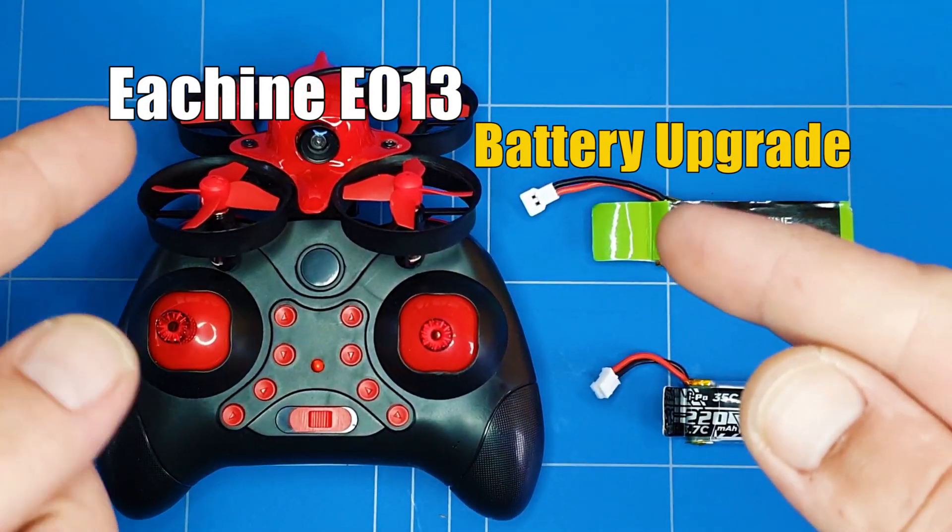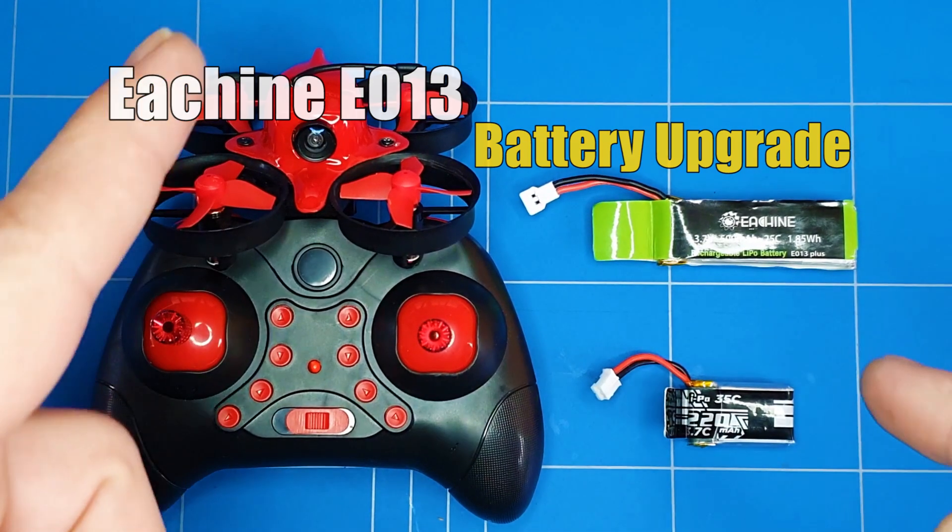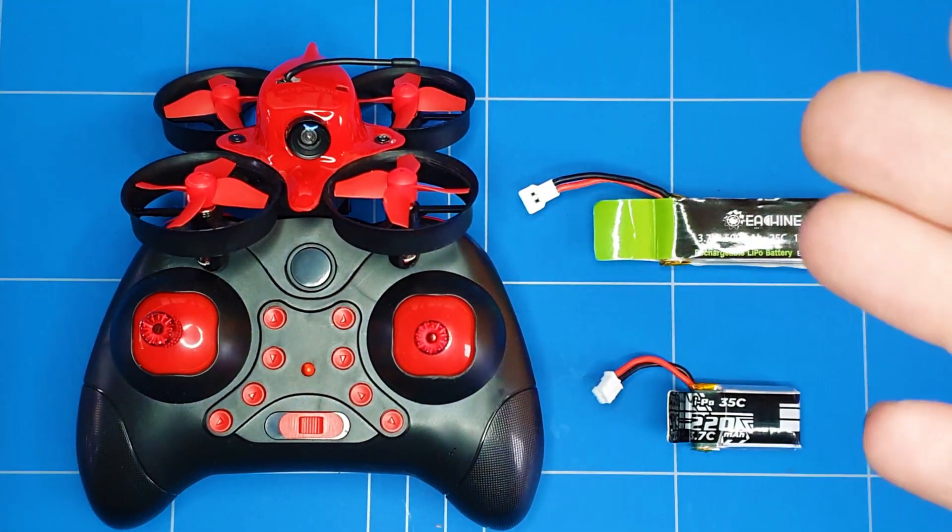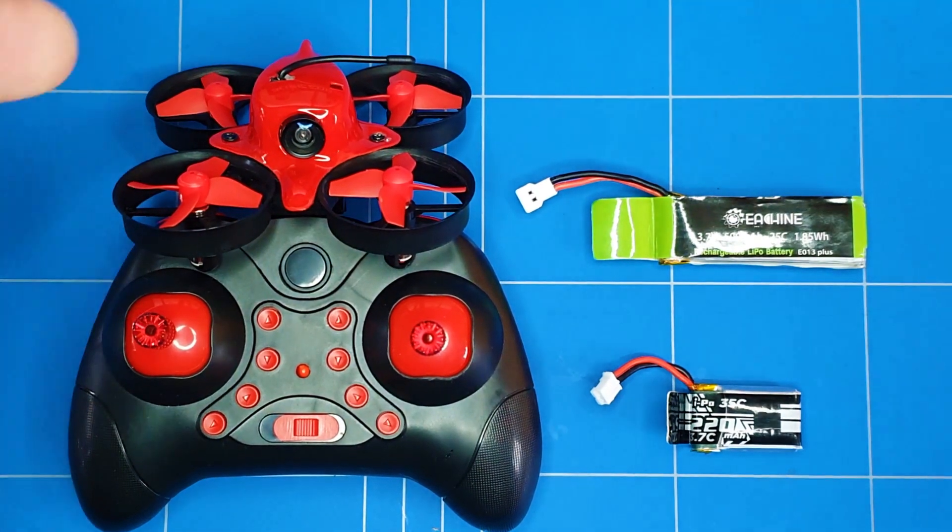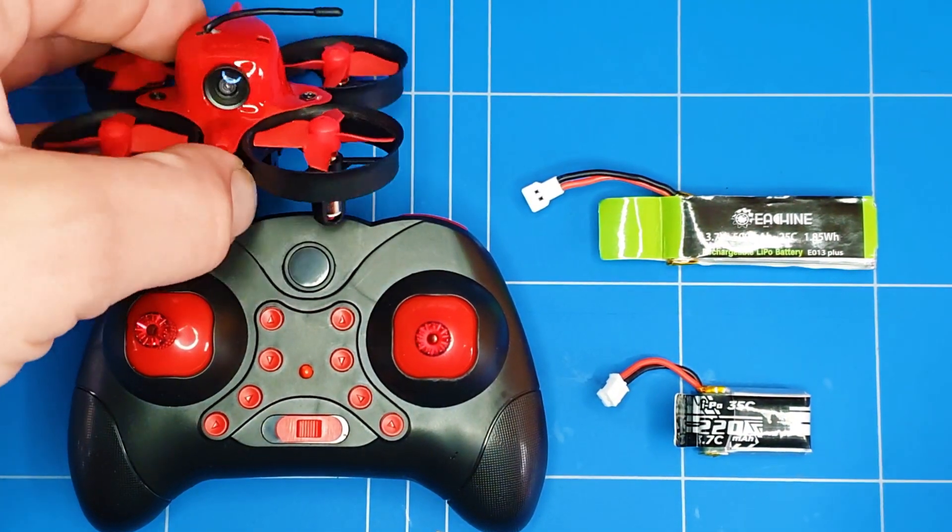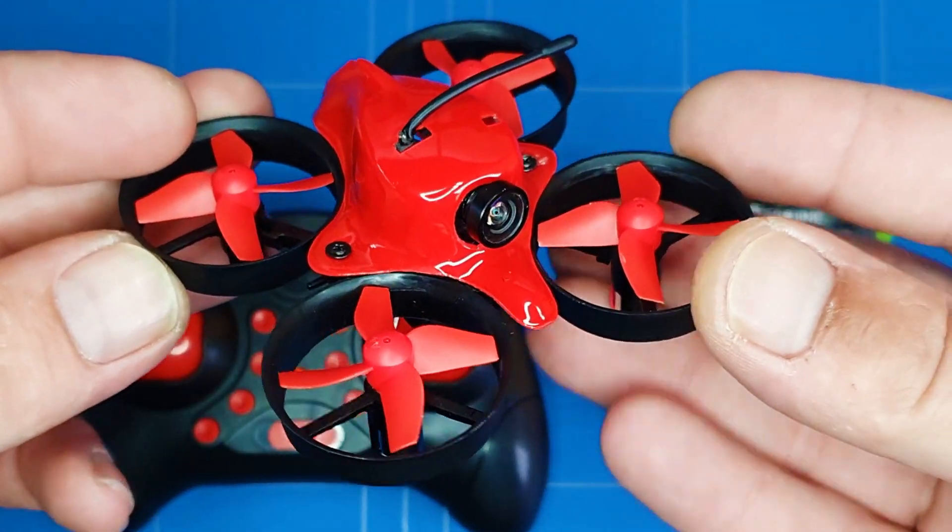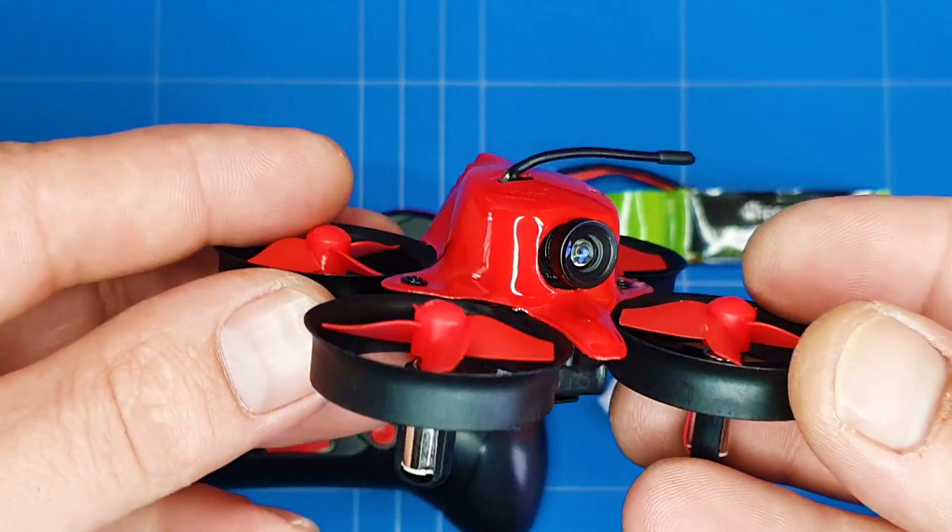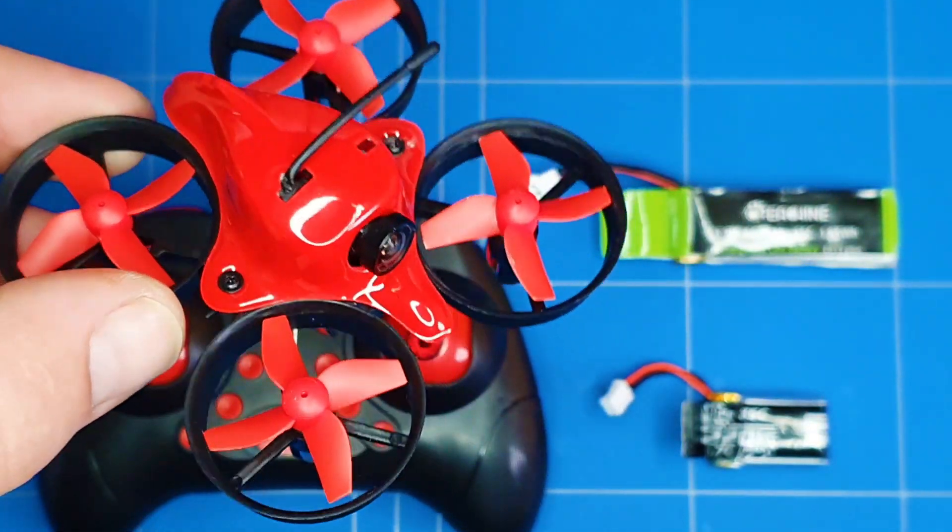Hello everybody, welcome back to a new episode. In today's episode we're going to upgrade the EZN E13 Pepper battery so we have more flight time and can enjoy this little drone a lot longer. It's flying FPV with altitude hold and one key takeoff. I love that one key takeoff and landing that makes it a really nice drone.